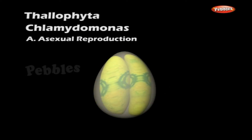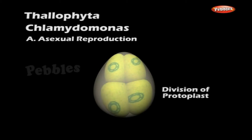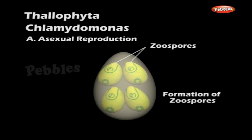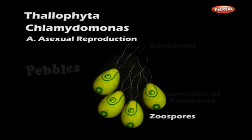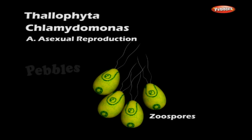The protoplast divides longitudinally into two protoplasts, which again divide and re-divide, resulting in four, eight, or sixteen daughter protoplasts. Each uninucleate daughter protoplast then secretes a wall around it and develops two flagella at its anterior end. The cell wall of the parent cell decays or ruptures and the daughter cells, or zoospores, become free.